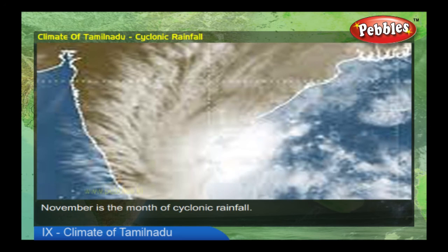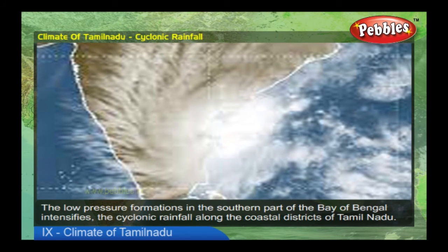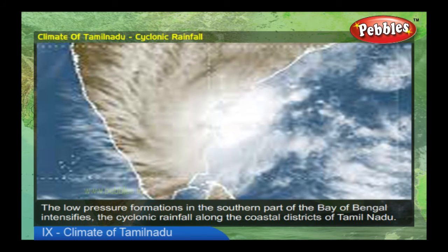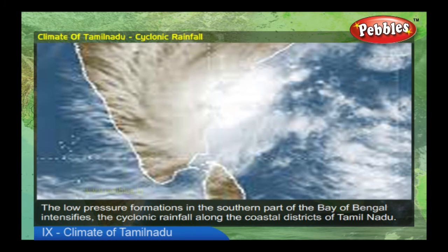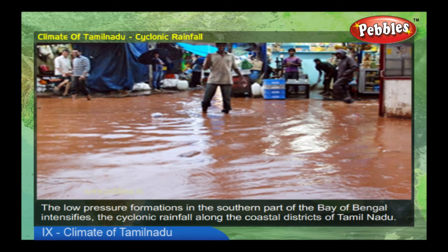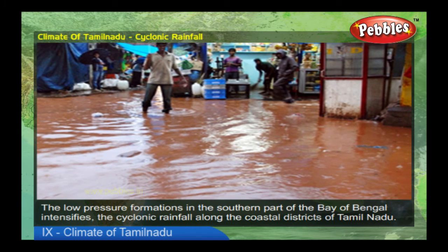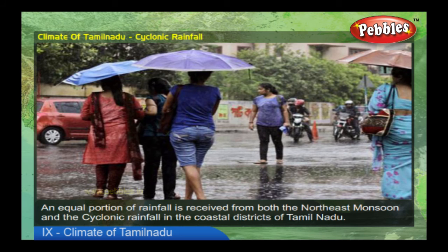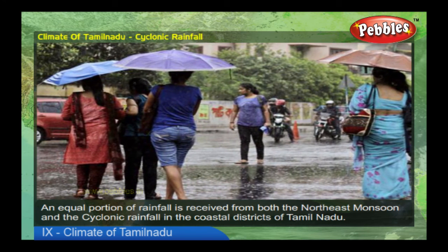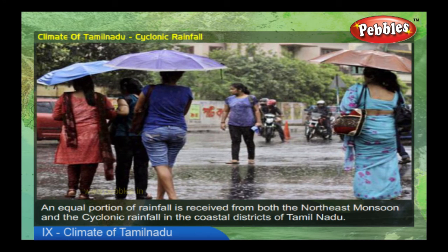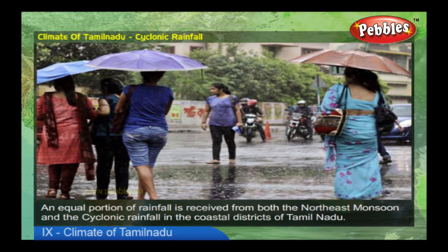November is the month of cyclonic rainfall. Low pressure formations in the southern part of the Bay of Bengal intensify the cyclonic rainfall along the coastal districts of Tamil Nadu. An equal portion of rainfall is received from both the northeast monsoon and the cyclonic rainfall in the coastal districts of Tamil Nadu.